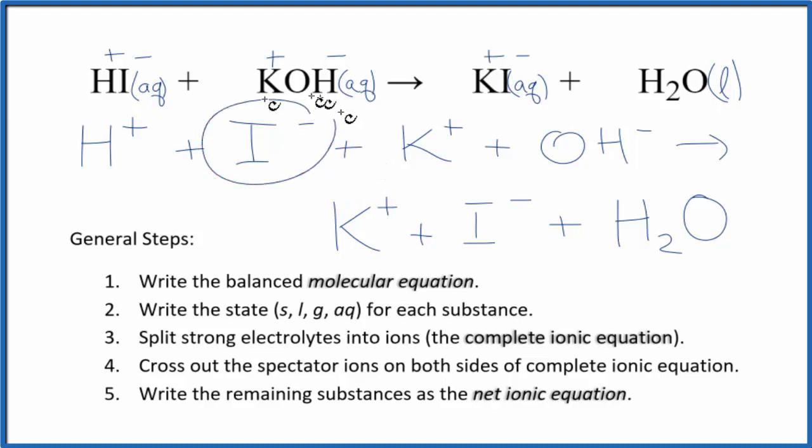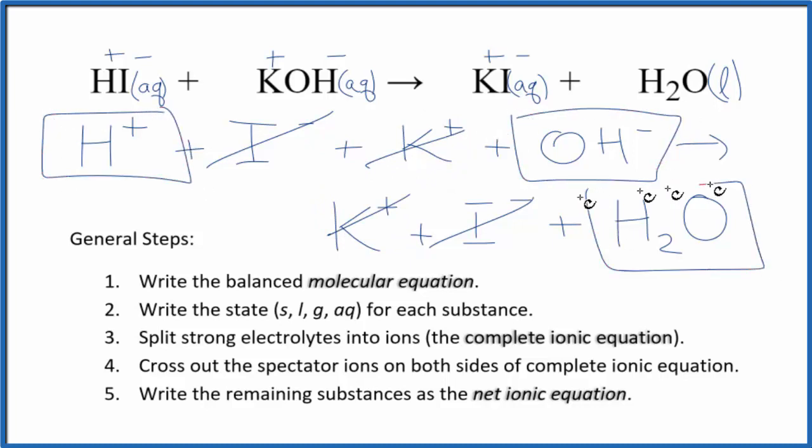I see here in the reactants the iodide ion, and here in the products, so I'm just going to cross that out. I can see the potassium ion as well in the reactants and products. Let's cross it out. And what's left is the net ionic equation for HI plus KOH.